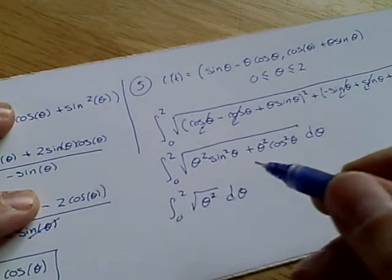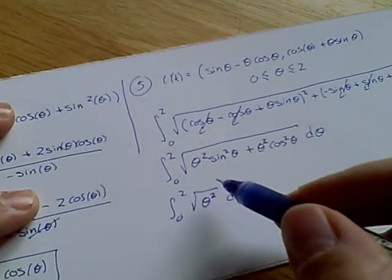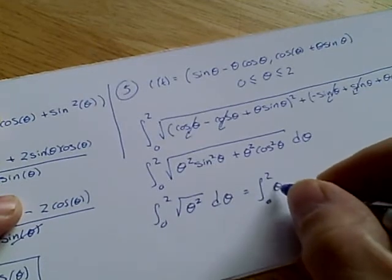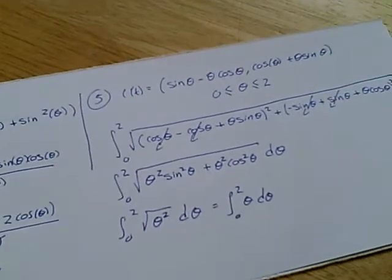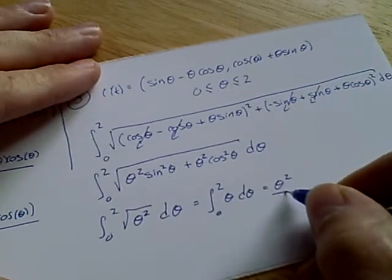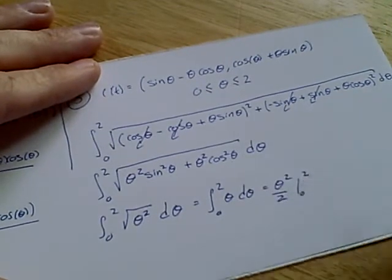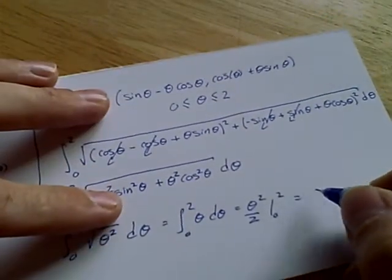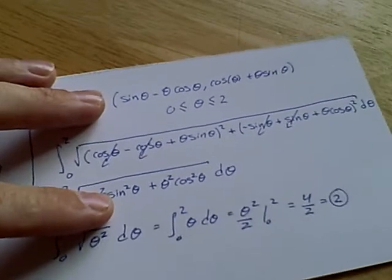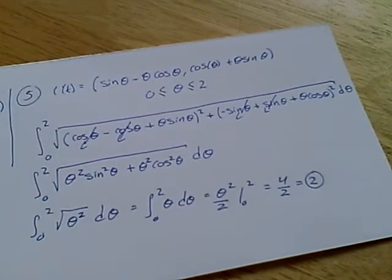And we have positive limits of integration here. So we don't have to worry about any of this absolute value of θ stuff. So it's 0 to 2 θ, d θ. Couldn't ask for a better integral. This is θ squared over 2 from 0 to 2. Or 4 over 2 equals 2. And so the arc length would be 2.